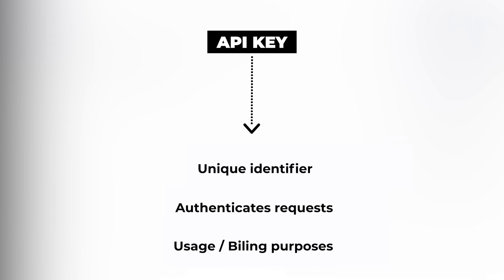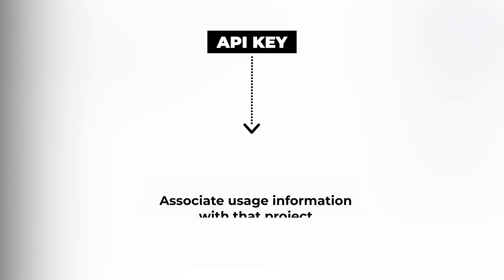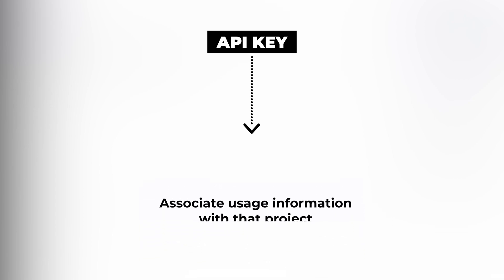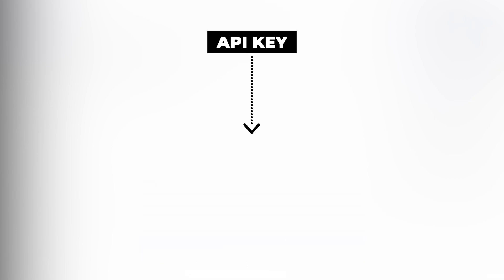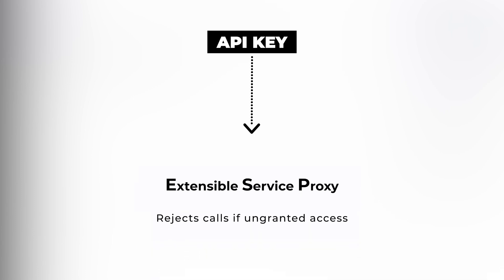you can use API keys to associate usage information with that project. API keys allow the Extensible Service Proxy to reject calls from projects that haven't been granted access or enabled in the API.